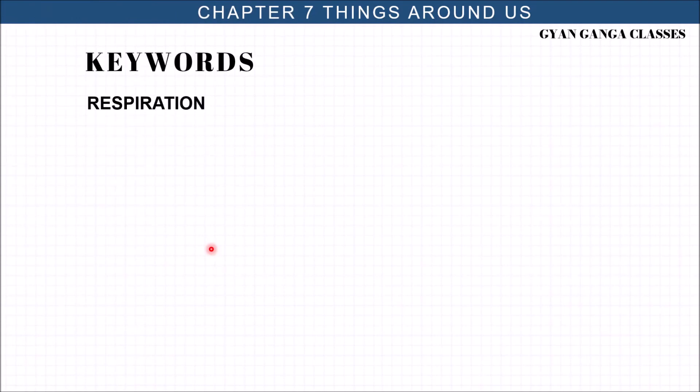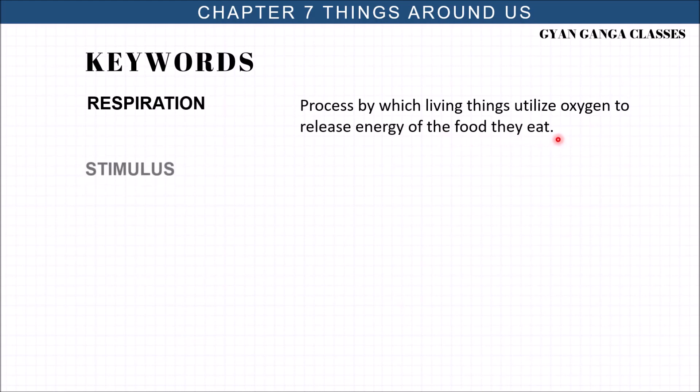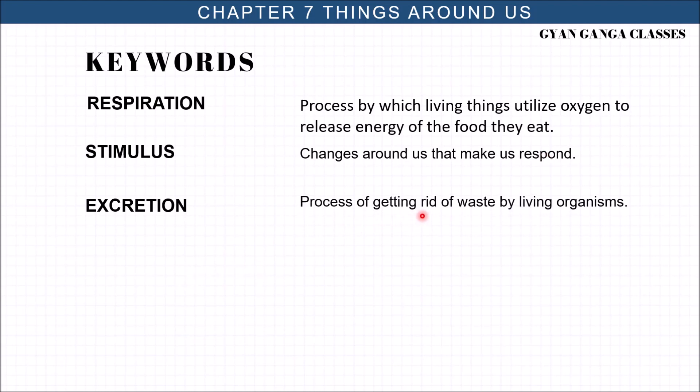Respiration: the process by which living organisms utilize oxygen to release the energy of the food they eat. Stimulus: changes around us that make us respond. Excretion: process of getting rid of waste by living organisms. Reproduction: process through which living organisms produce young ones of their own kinds.